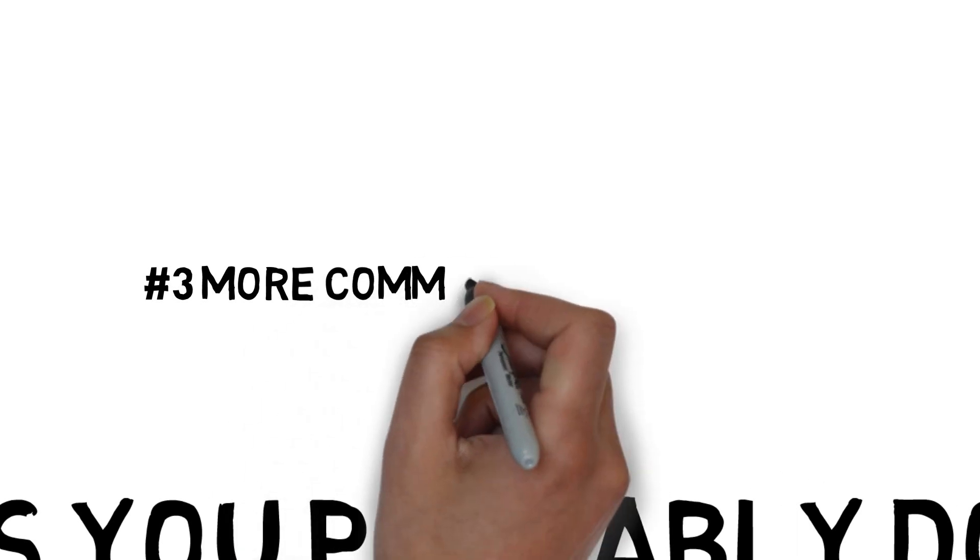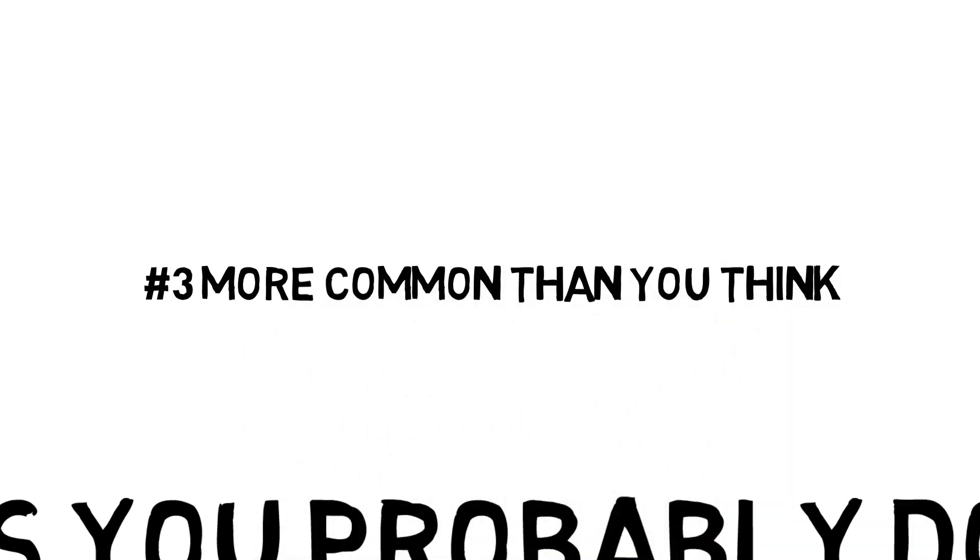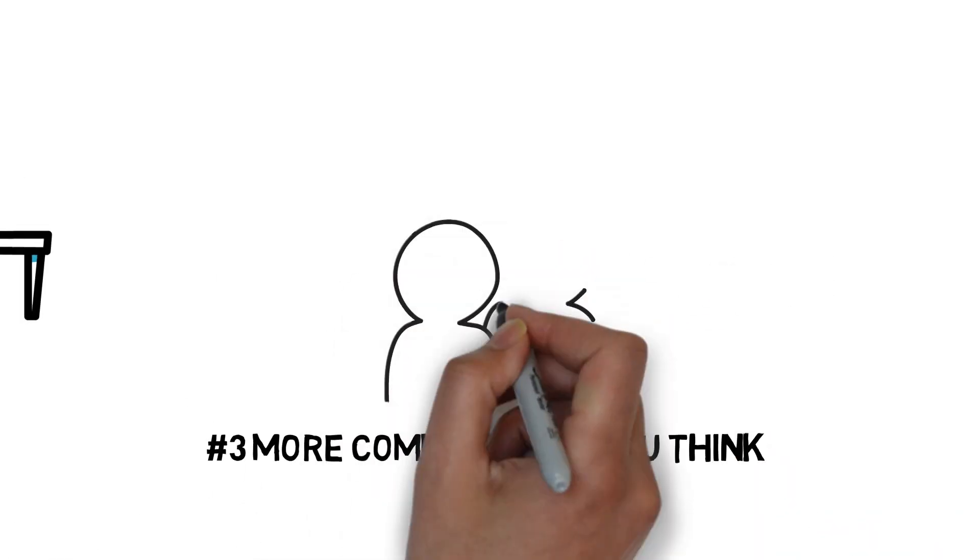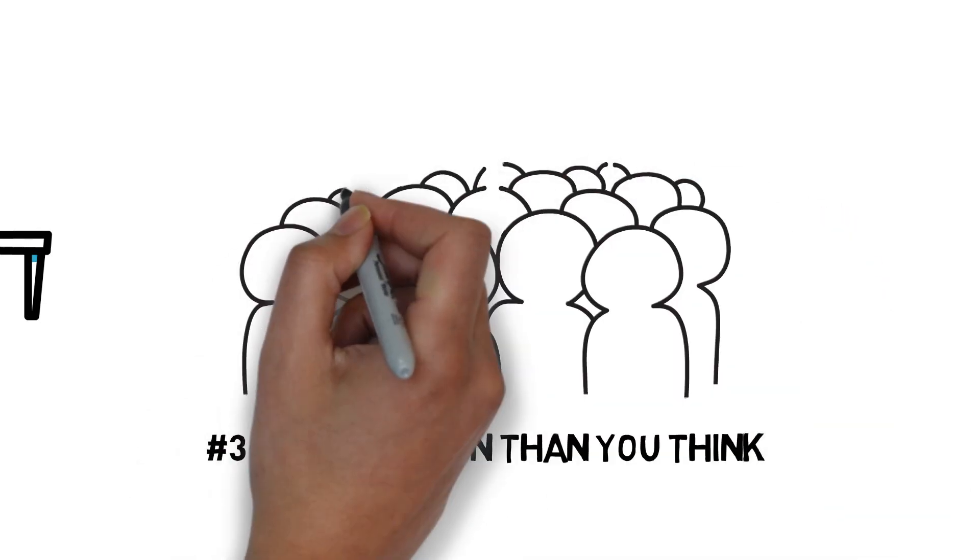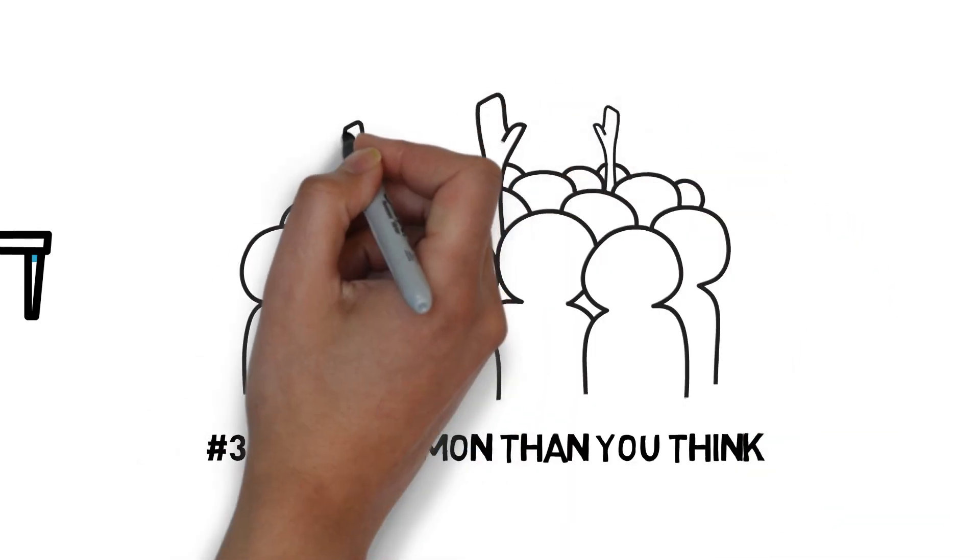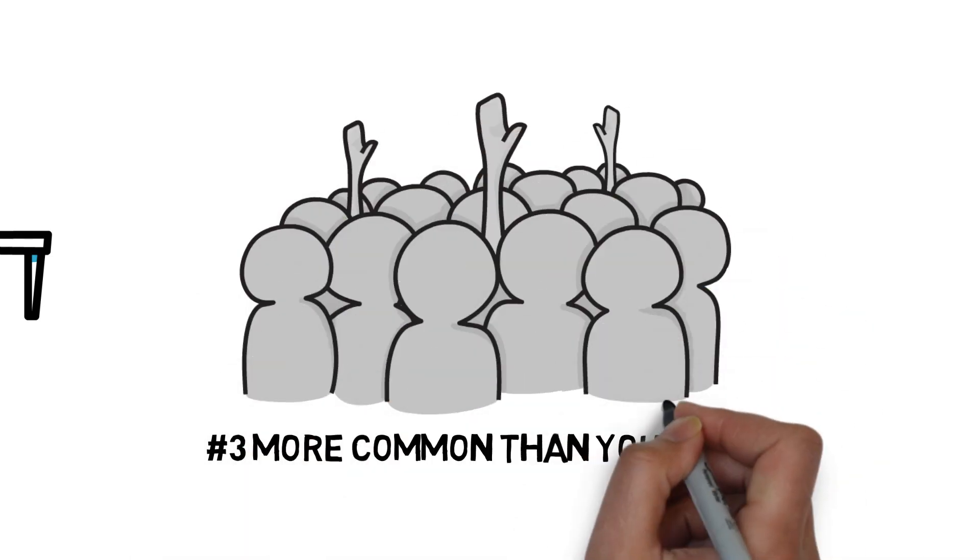Number 3. Celiac disease is more common than you might think. 1%, that's 1 in every 100 people, has celiac disease worldwide. That's not taking into account people who are simply gluten intolerant, which is closer to 5 to 10% worldwide.